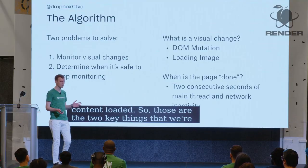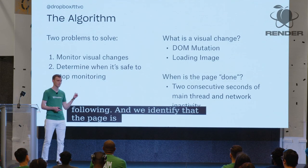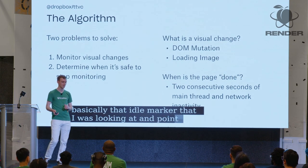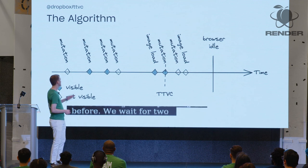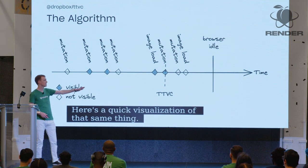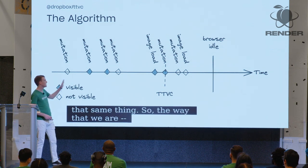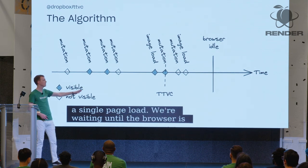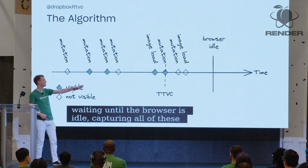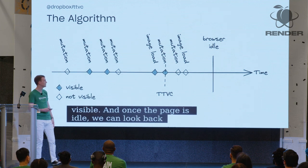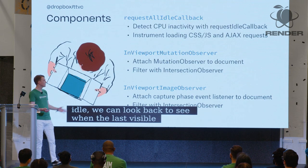We identify that the page is done by looking for that idle marker — we wait for two consecutive seconds of main thread and networking inactivity. Here's a quick visualization: we're waiting until the browser is idle, capturing all of these mutations and image loads, filtering for which ones are visible. And once the page is idle, we can look backward, see when the last visible change was, and mark that as time to visually complete.